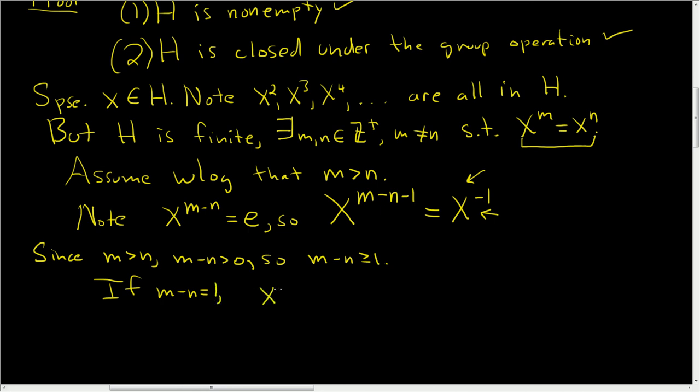So we just get 1 minus 1. So we get X to the 0, which is equal to the identity. Now, if X inverse is the identity, then X is the identity because the inverse of the identity is the identity. So this is in H, right, because then this is X. If X inverse is E, then X is E, so it's in H.